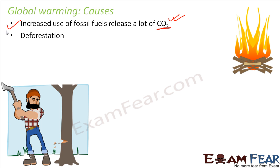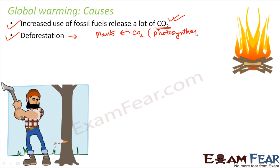The second cause is deforestation. When we cut down trees, we reduce the organisms that utilize carbon dioxide. Plants take in carbon dioxide during photosynthesis, so if we reduce the number of plants, the utilization of carbon dioxide decreases. More carbon dioxide is left in the atmosphere, increasing its concentration.